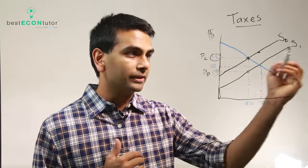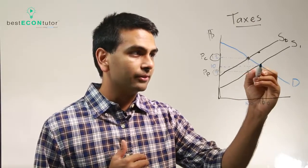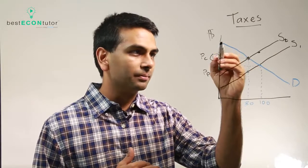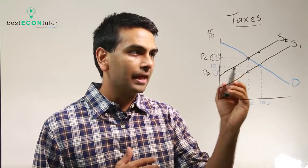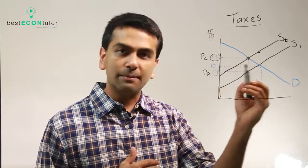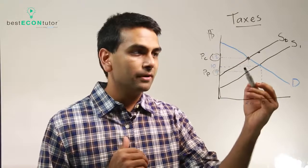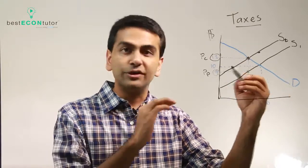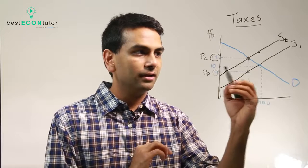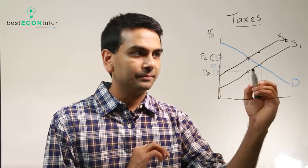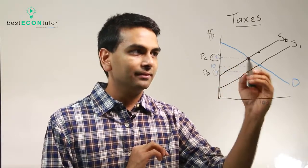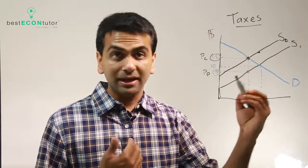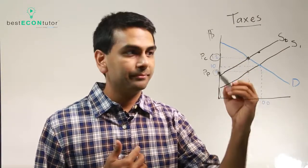Before the tax, when we were at an equilibrium of 100 units with the price of 10, the consumer surplus was this triangle — everything above 10 underneath the demand curve. The producer surplus was this triangle, everything underneath 10 and above the supply curve. So this whole thing was the total surplus. Let's look at how much less we have now compared to all that.